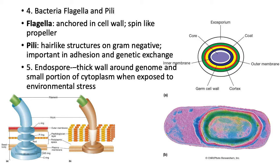When conditions improve, the bacteria shed those walls, germinate, and return to normal cell division. We've discovered bacteria cells centuries old. There's a movie called 'The Thaw' with Val Kilmer where researchers find a woolly mammoth that died from a pathogen lying dormant in an endospore, and when brought to the lab people start getting sick.